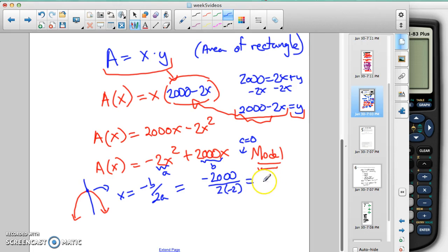So we're going to get negative 2,000 divided by negative 4, which is going to be 500. Oops. Not 5,000. 500.